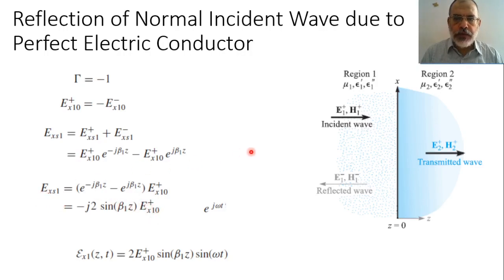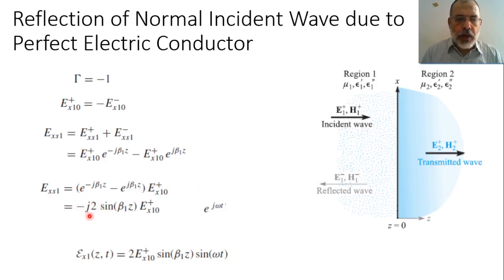This is the phasor form of the total field in region 1. To obtain the instantaneous time field, we multiply this phasor by e^(j·omega·t) and take the real part. The instantaneous electric field in region 1 is the real part of minus 2j·sin(beta1·z)·EX1(0+)·e^(j·omega·t), which gives 2·EX1(0+)·sin(beta1·z)·sin(omega·t).